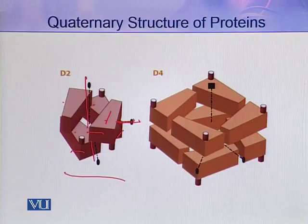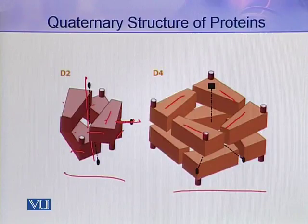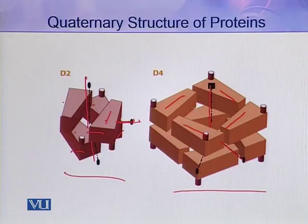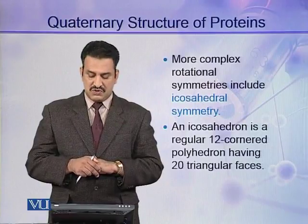Similarly, in this you can see the number of protomers is increasing. This symmetry is called D4 dihedral symmetry, in which again four protomers are present, but again there are at least two rotational axes present in the molecule. A more complex rotational symmetry includes icosahedral symmetry.